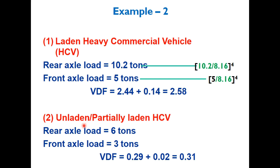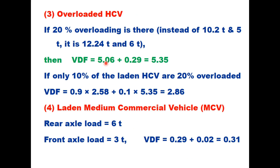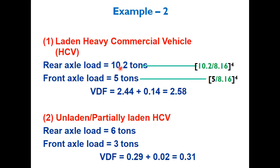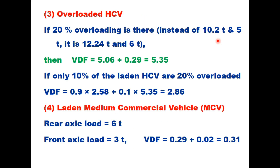An unladen or partially laden truck with rear axle load of 6 tons and front axle load of 3 tons gives VDF of (6/8.16)⁴ = 0.29 plus 0.02 = 0.31. If 20% overloading is assumed — rear axle 12.24 tons, front axle 6 tons — VDF becomes 5.06 + 0.29 = 5.35. If only 10% of laden heavy vehicles are 20% overloaded, then VDF = 0.90 × 2.58 + 0.10 × 5.35 = 2.86.